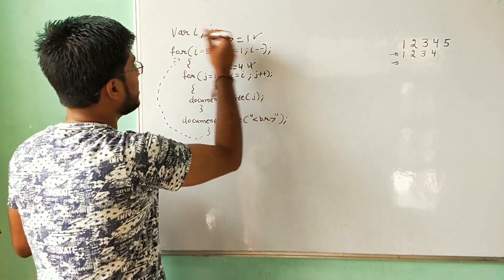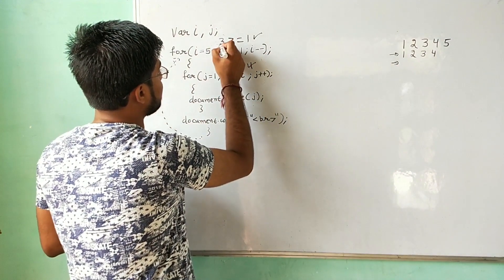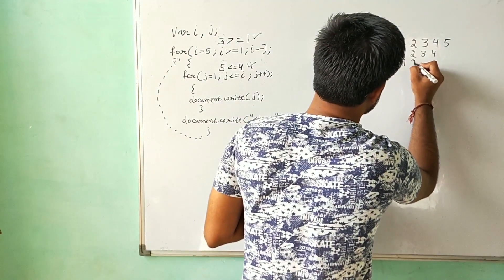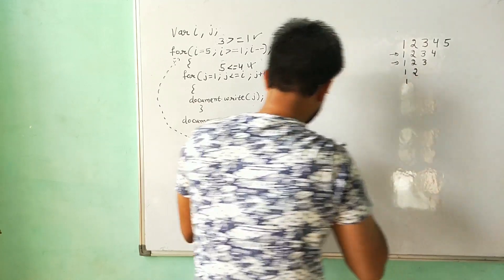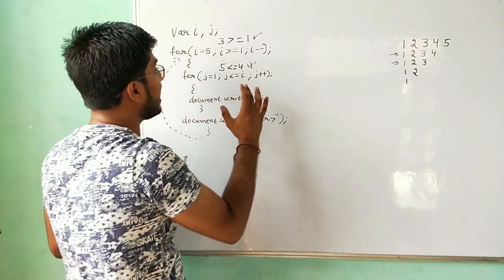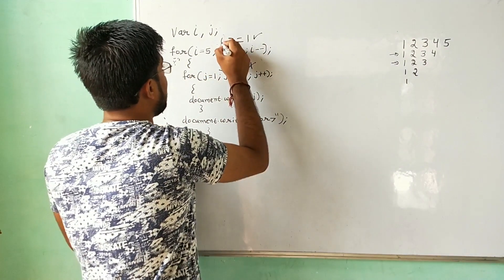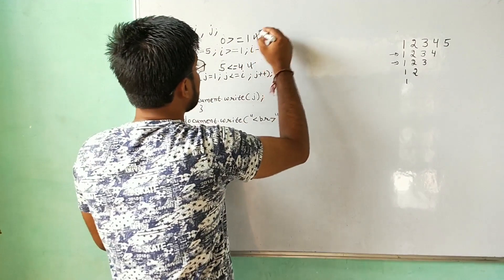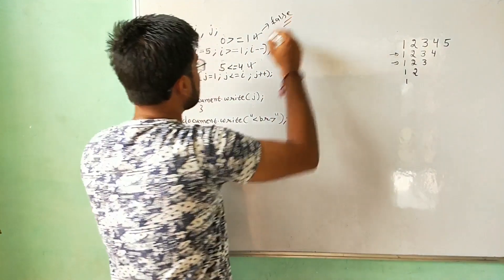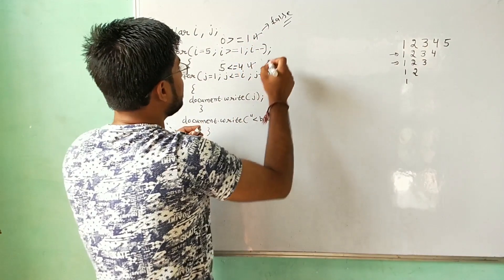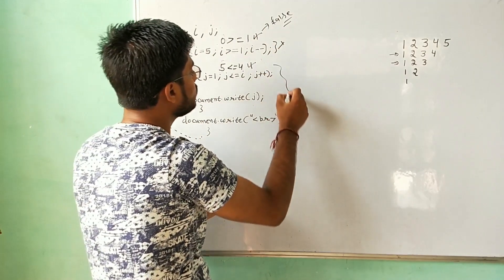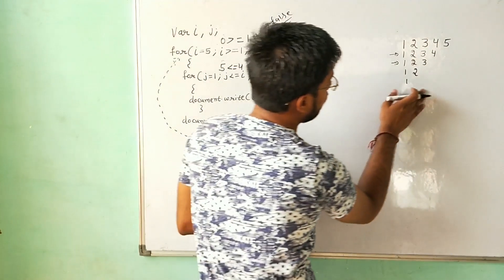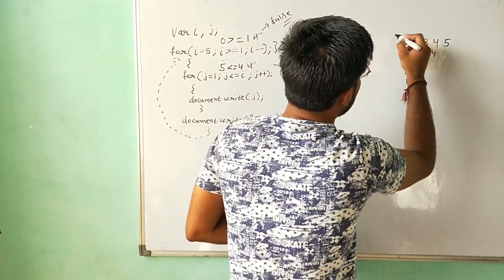Next time it will go back to the outer loop and decrease the value of i to three. The same flow will run again, printing one two three. Then i becomes two, printing one two. Then i becomes one, printing one. This loop continuously goes like that. Finally, i will have the value zero, and since zero is not greater than or equals to one, the condition is false. The outer loop will not execute, all statements stop, and we have our desired pattern.